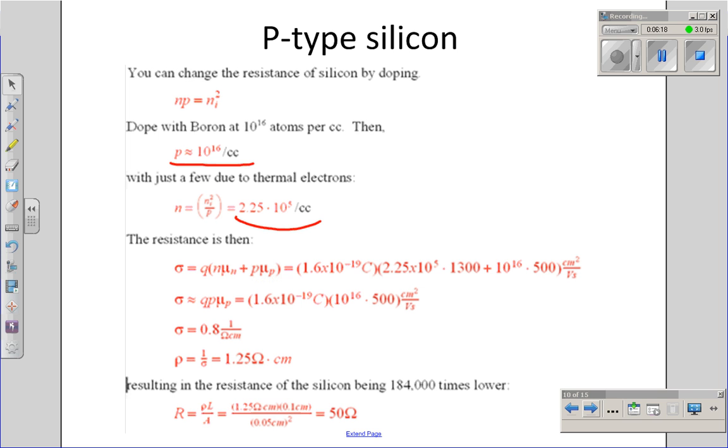The resistance of the same piece of silicon that we looked at, resistivity drops down to 1.25 ohm centimeters, 184,000 times smaller than the undoped silicon. I can take a piece of silicon and turn it into a conductor by doping it. I can also build a resistor. For example, if I built an 0402 resistor, which has dimensions of 0.1 by 0.05 centimeters, I would have a 50 ohm resistor.